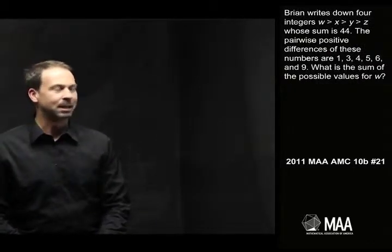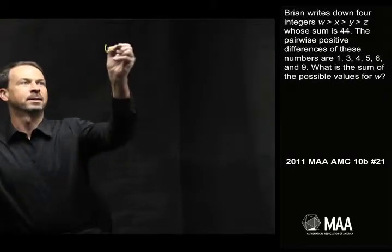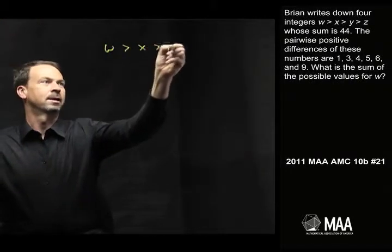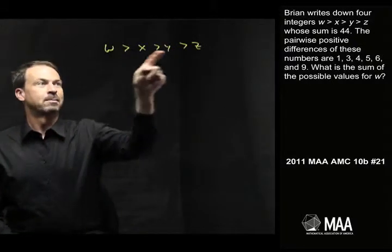Brian writes down four integers: w greater than x, greater than y, greater than z. Let me just write that on the board for myself. w is greater than x, greater than y, greater than z, whose sum is 44. Okay, so these four numbers add up to 44.